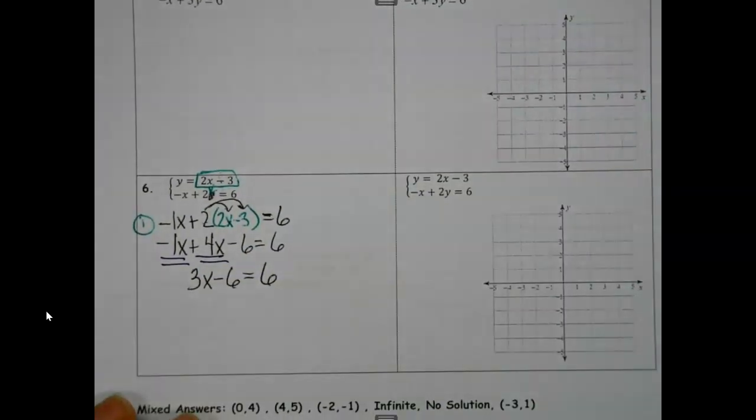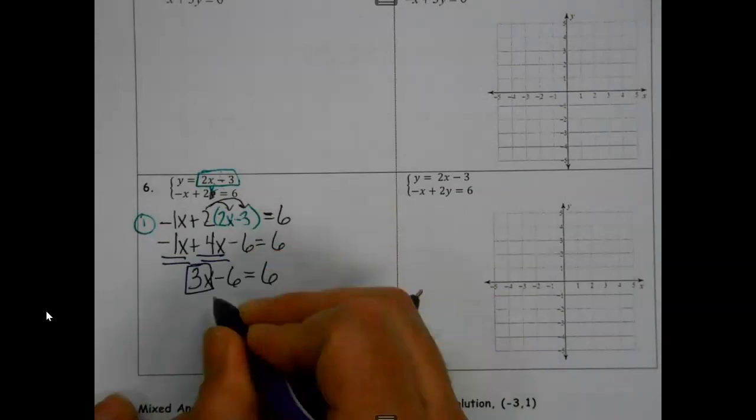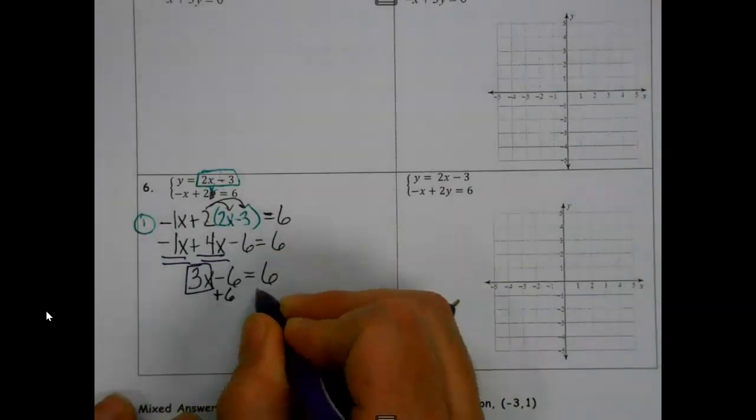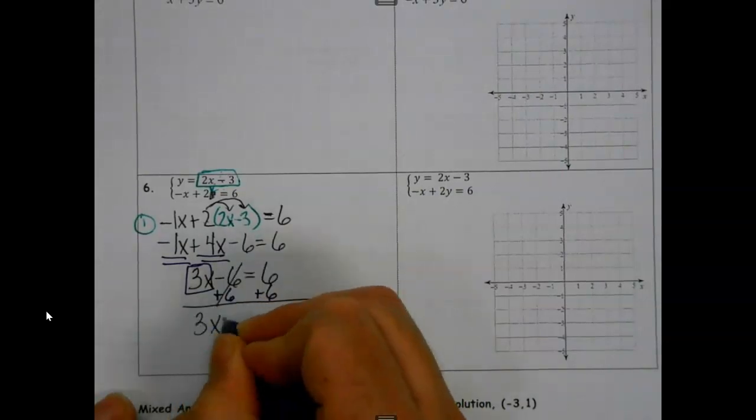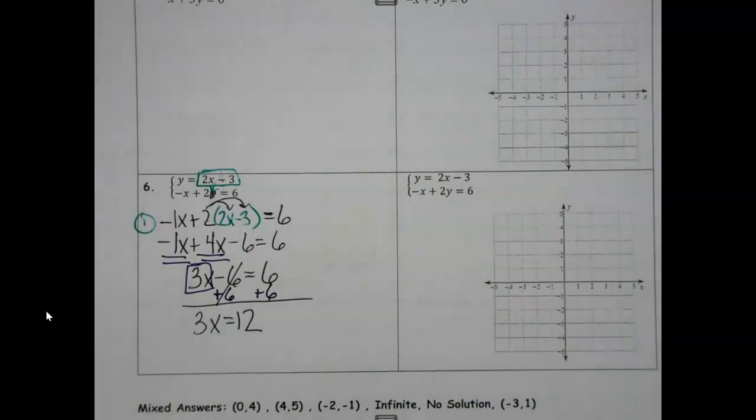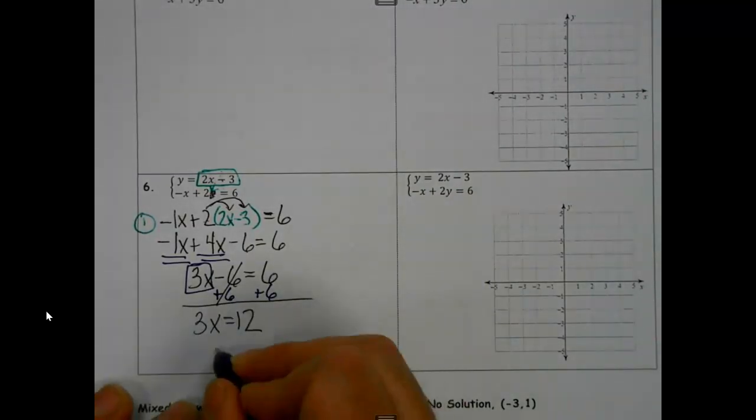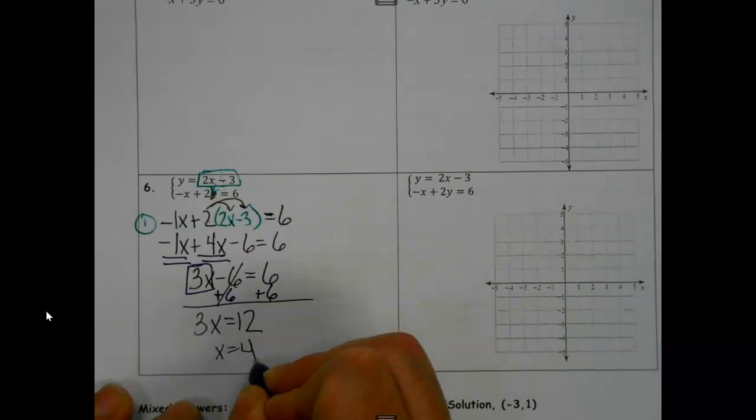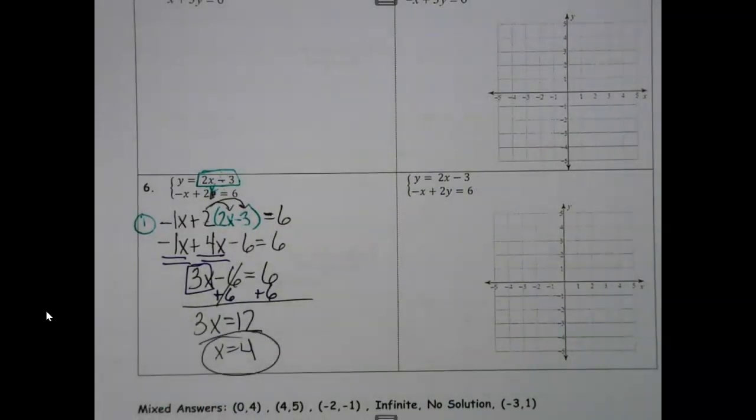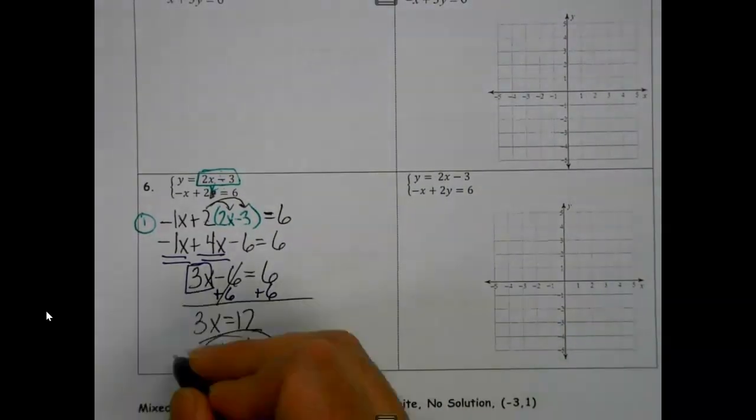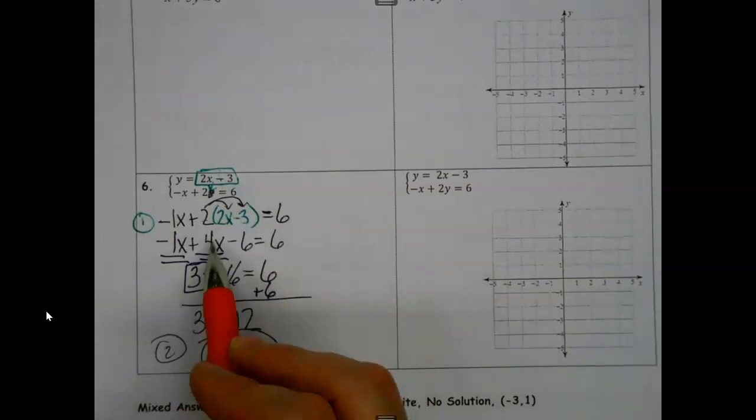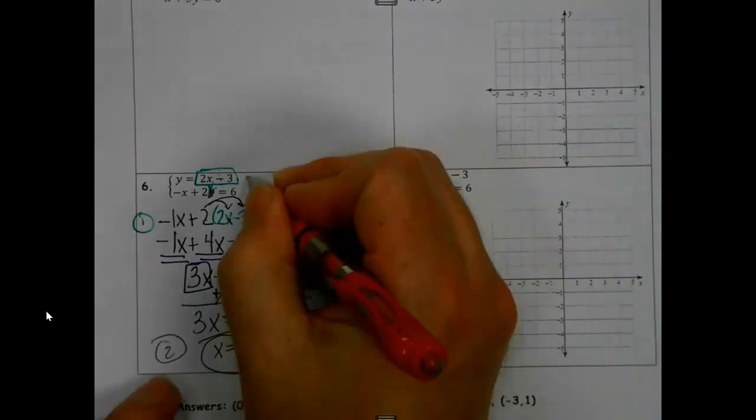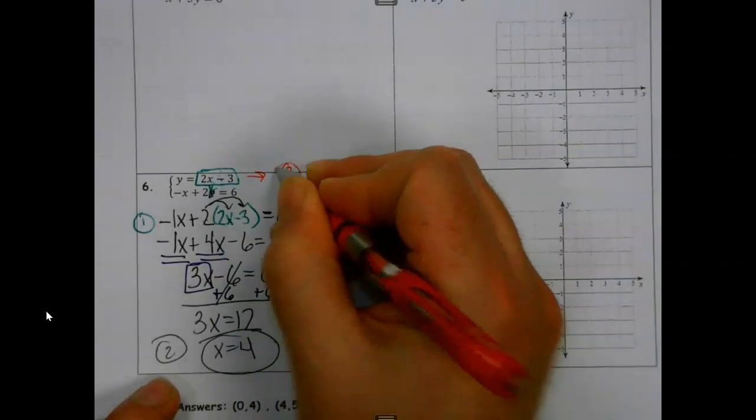And now the Algebra 1 game begins. Now my only goal is to work on getting x alone. Divide by three, get that value. Again, that was the hard part. We survived. I think the hard part here is just getting here to here. I think the rest of it, I have lots of good equation solvers out there.